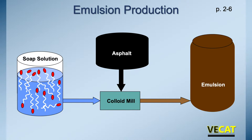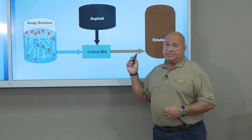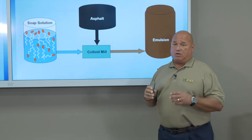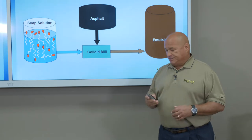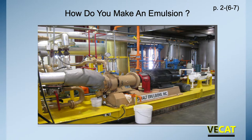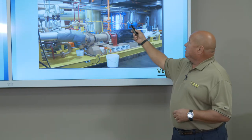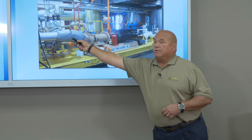Here's a brief example of how emulsions are made. You have a soap solution and an asphalt source going into the colloid mill, and once it runs through this mill, the finished product comes out into your emulsion storage tank. This tank has to be insulated to keep the emulsion at a specified temperature. Once it goes through the mill, the asphalt is sheared down to a size of less than five microns — thinner than a human hair. Here's an example of a colloid mill in an actual plant, showing the electric motor that drives the mill, the lines bringing in water and asphalt, and the finished product going out to the tank farm.